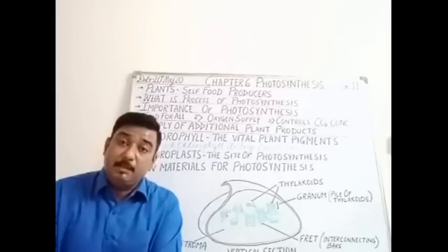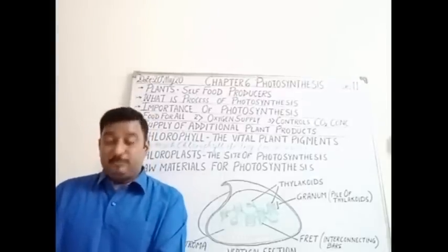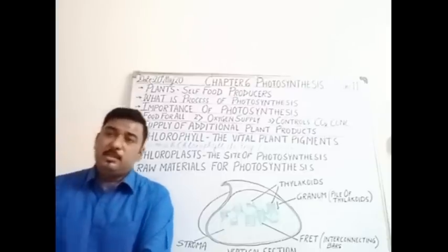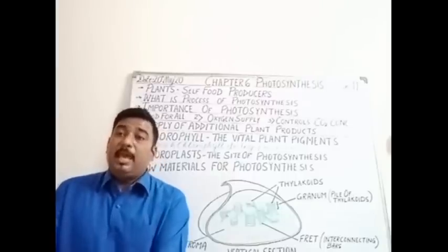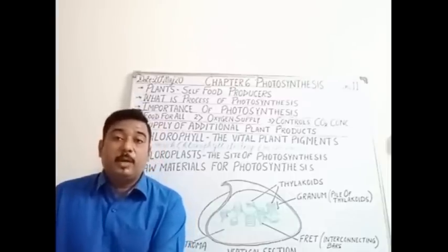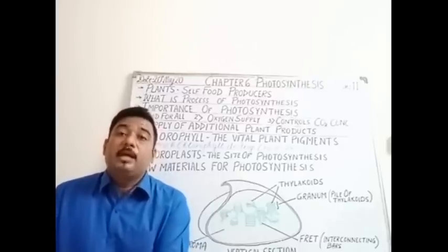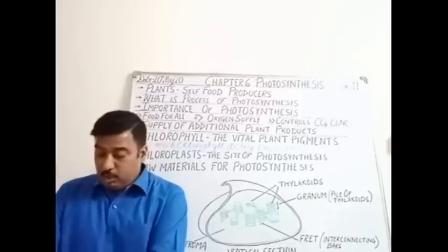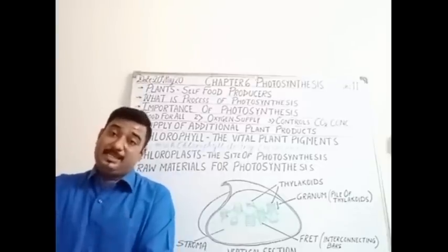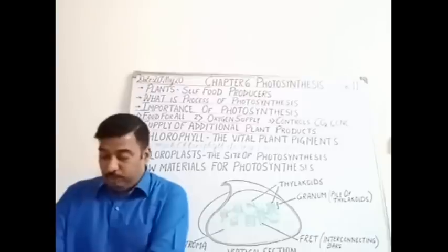Oxygen supports all life on the earth; no living being can remain alive without oxygen, and it comes by the process of photosynthesis carried out by green plants. The next significance is that photosynthesis controls the carbon dioxide concentration. Plants require carbon dioxide as a raw material, and they get it from the atmosphere. During the daytime, through the stomata, carbon dioxide enters inside the plant and is used as a raw material to carry out photosynthesis.